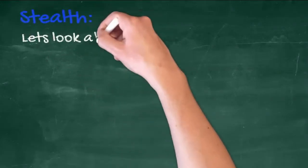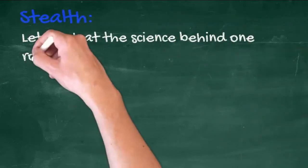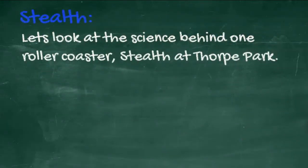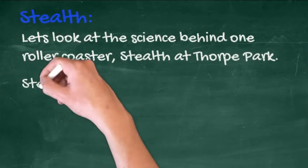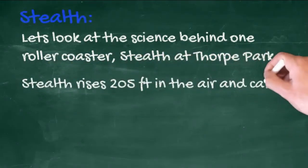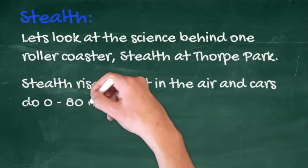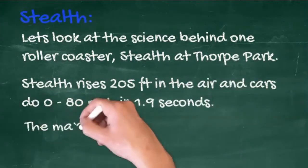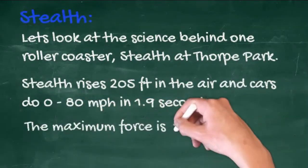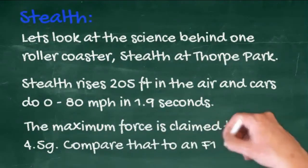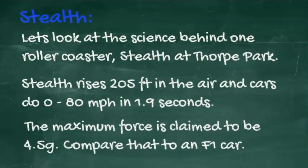Let's look at the science behind one particular roller coaster — Stealth at Thorpe Park. Stealth rises 205 feet in the air and the cars do 0 to 80 miles an hour in 1.9 seconds. The maximum g-force is claimed to be 4.5.